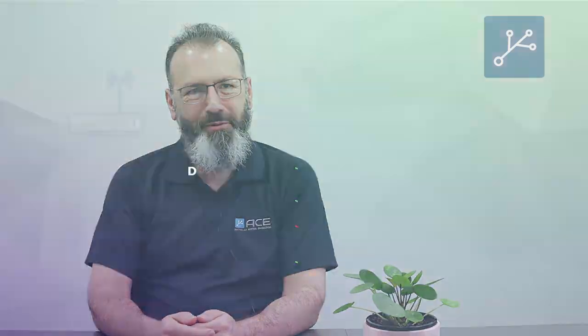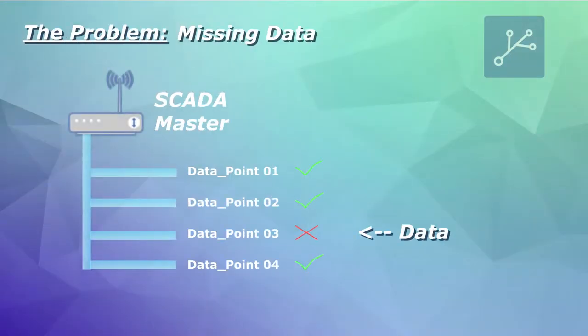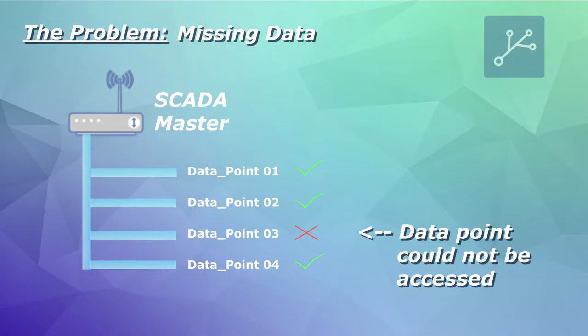We had another problem recently involving 61850. This one had to do with a point that refused to come through — all the other points were coming through just fine. We left it until the very end, until it was the last point we had to fix. Everybody had confirmed they'd done the right thing and mapped it correctly, and the point was configured correctly. We used third-party tools to verify that it worked fine, but it didn't work in the system.